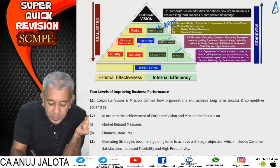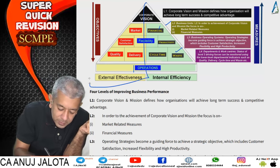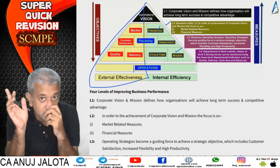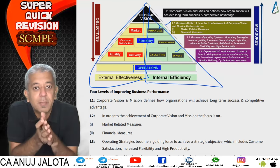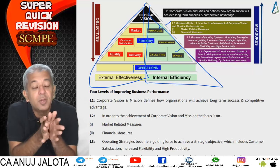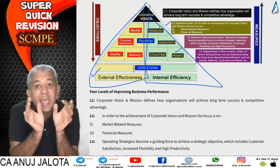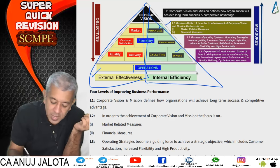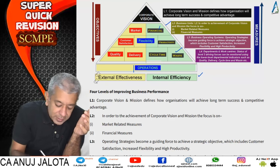The left-hand side of the pyramid — customer satisfaction, flexibility, quality, and delivery — is all external, pertaining to the customer. The right-hand side — efficiency, cycle time, and waste reduction — is all internal, inside the company. The left side is called external effectiveness: how effective you are in the market. The right side is internal efficiency: how effective you are internally.